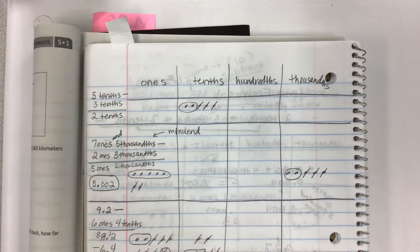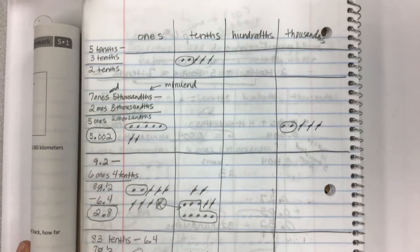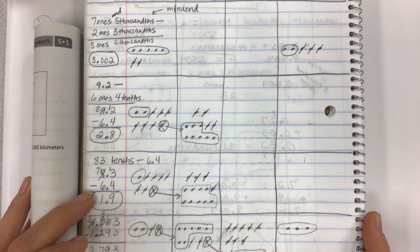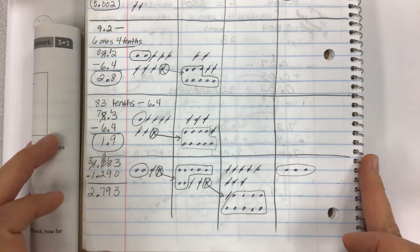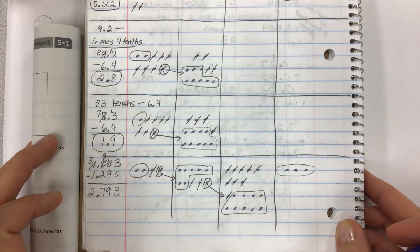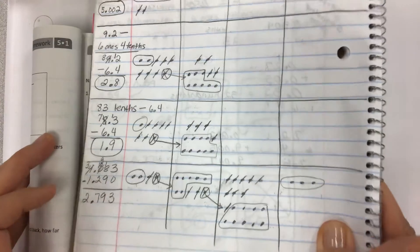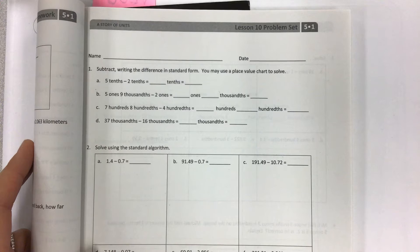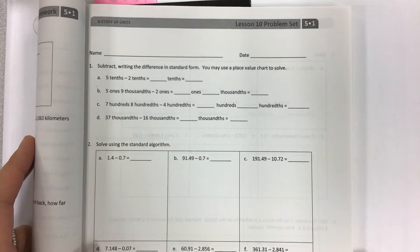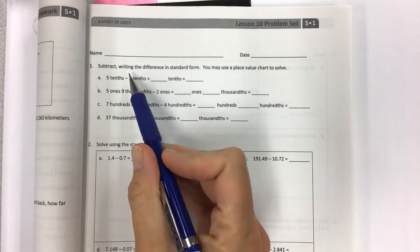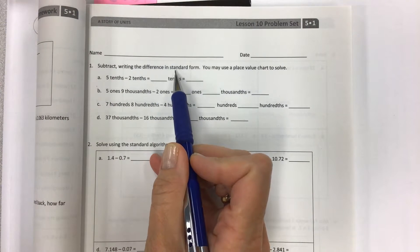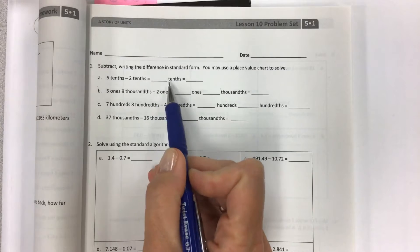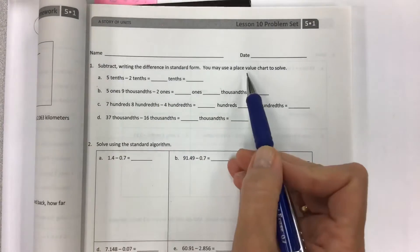For today's lesson, we're going to be using the place value chart again, using unit form again, to help us rename and look at the value of all the digits so that we can subtract. I'm going to move it up so that you guys can make sure, double check, that you have all of the notes from class before we jump into the book.